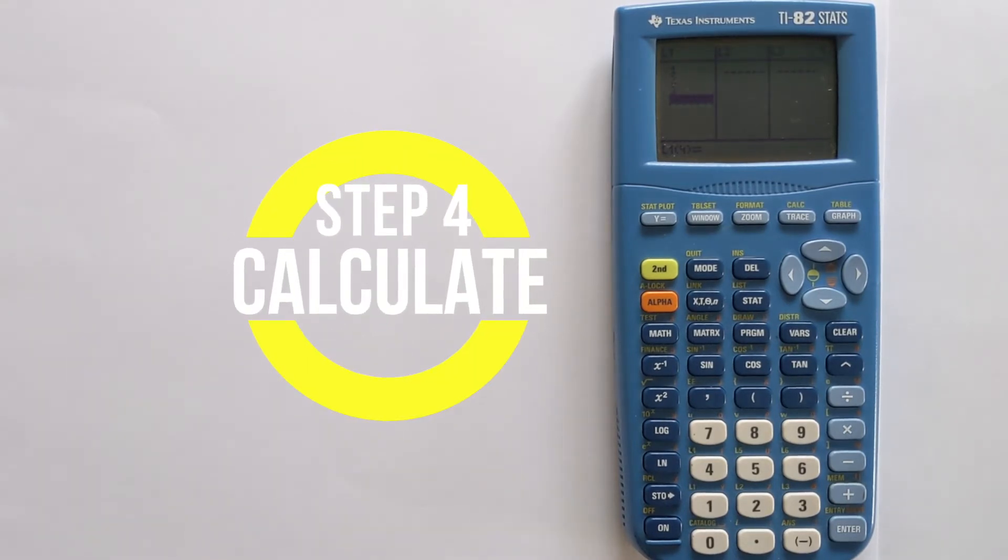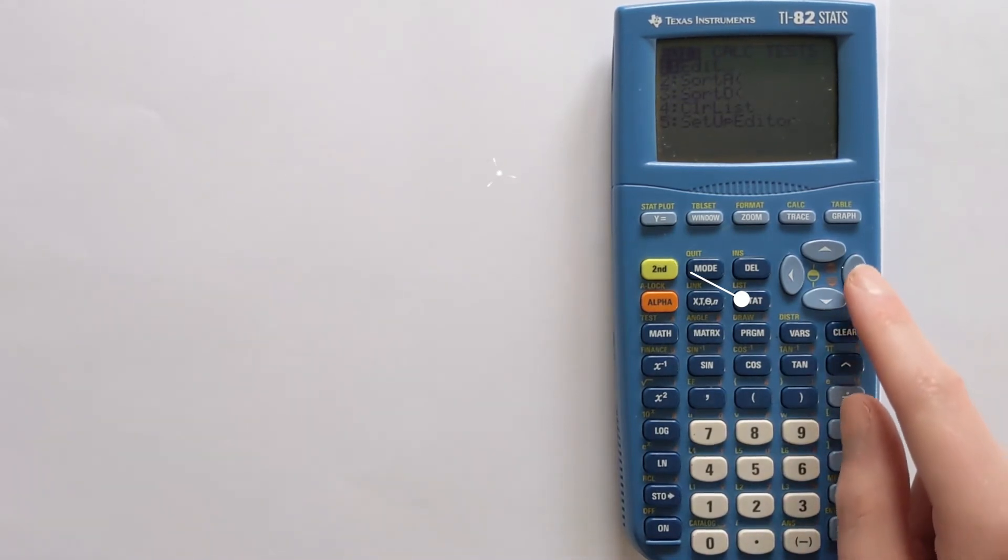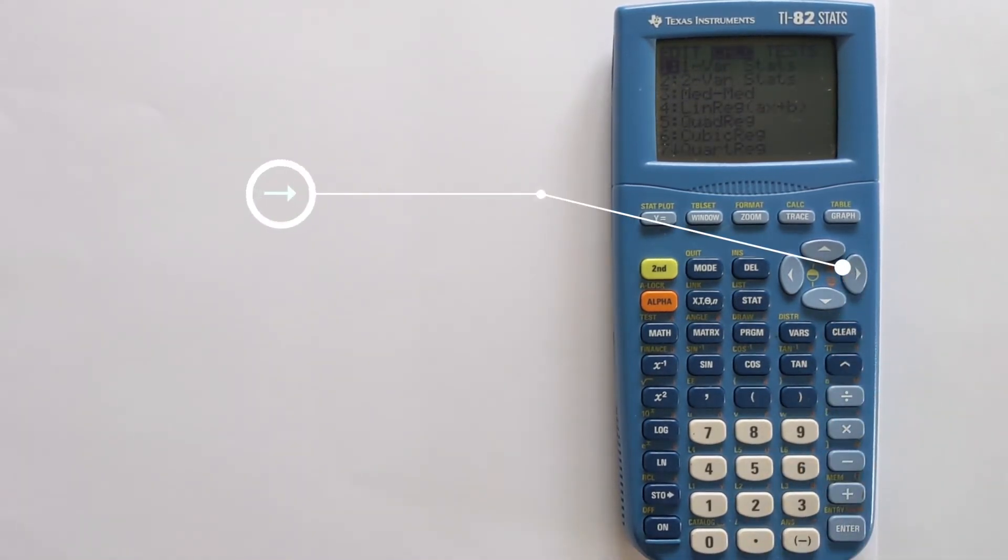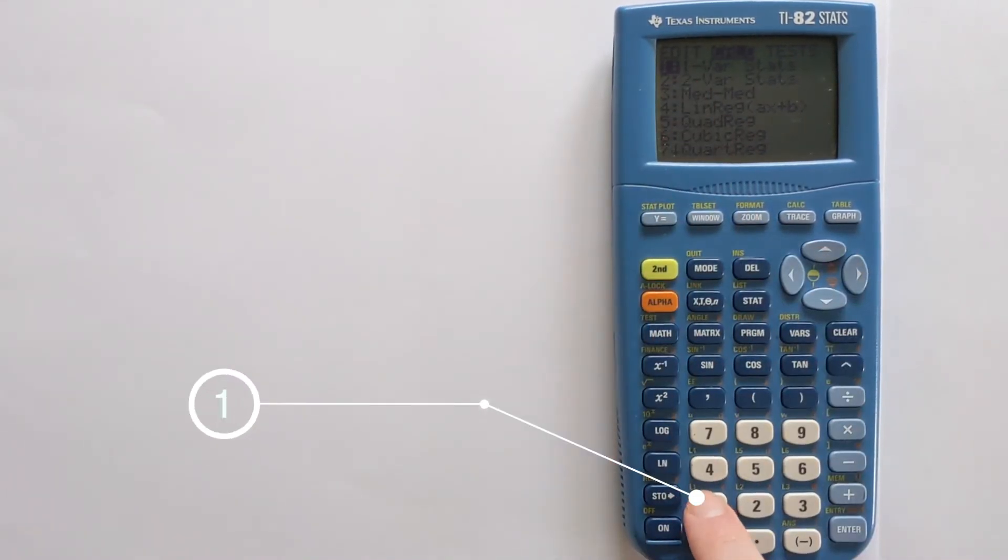We want to do the calculation. To do that, you just press STAT again. Then if you press the arrow here, that takes you to the CALC menu. You want to select option 1 for one variable statistics.